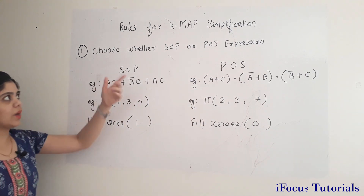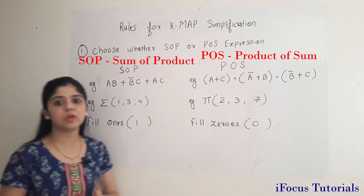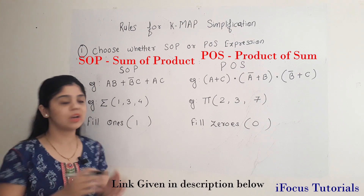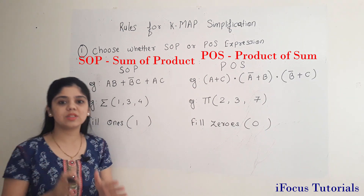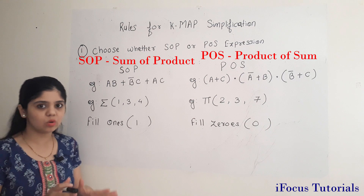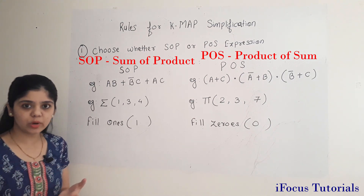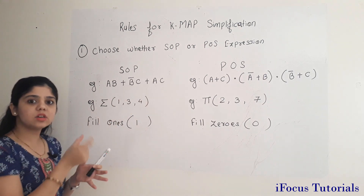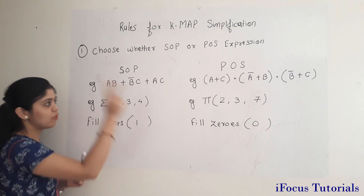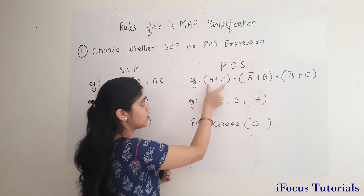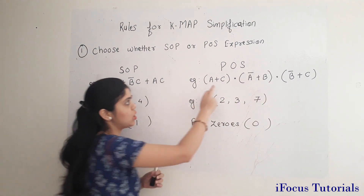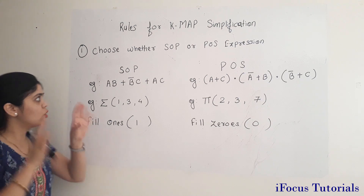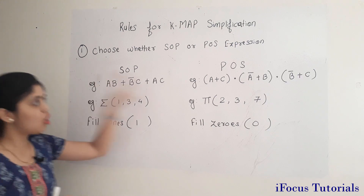The first rule is to choose whether the expression you have been given is an SOP expression or a POS expression. The SOP expression is the sum of products, where multiplication terms have been added together. A POS expression consists of addition terms that have been multiplied together — these are called product of sum terms.